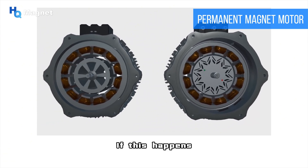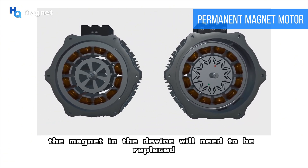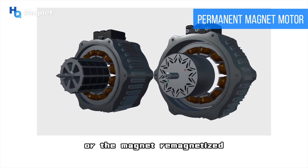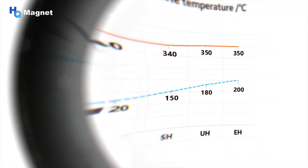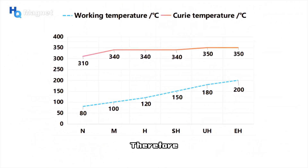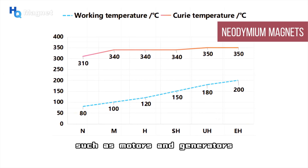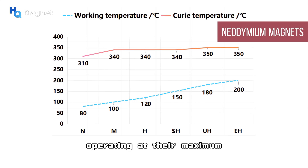If this happens, the magnet in the device will need to be replaced or the magnet remagnetized. Therefore, in order to ensure the normal operation of equipment such as motors and generators, we need to keep neodymium magnets operating at their maximum operating temperature.